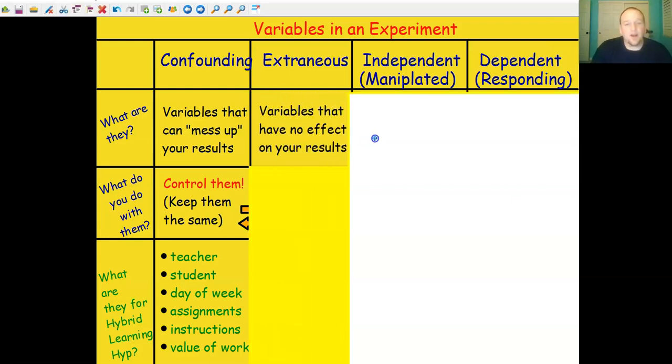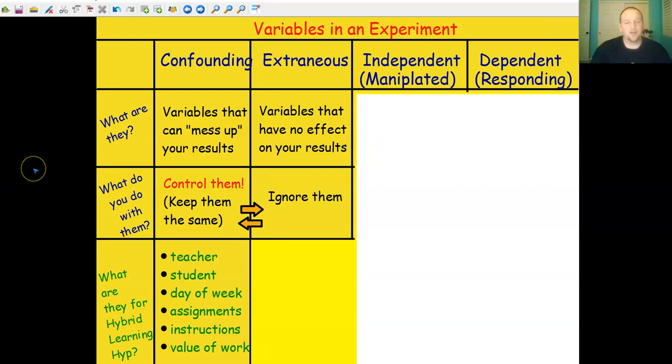The second group of variables are what we call extraneous variables. These are variables that have no effect at all on my results. Extraneous variables are things that you just allow, as an experimenter, to vary between your groups. I don't think hair length has a big impact on whether students do work in person or at home. I don't think the shoes that they're wearing matter much at home or in person. Those things are things I don't think matter, so what I'm going to do is I'm going to allow them to vary. I don't care if they're different between my groups.